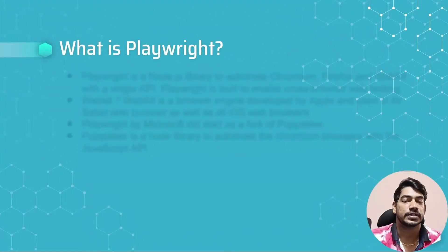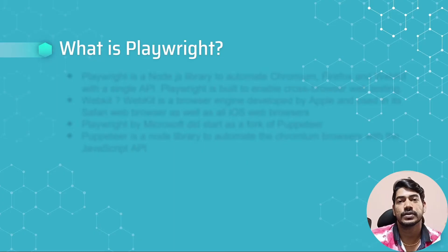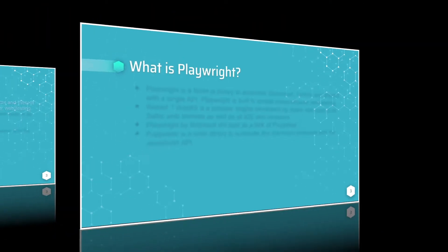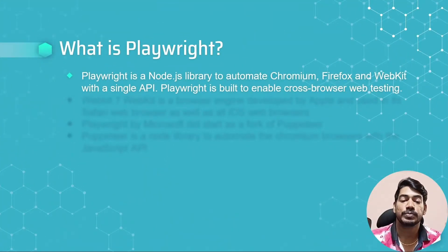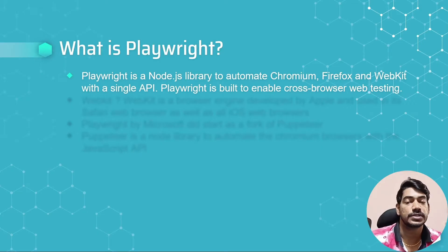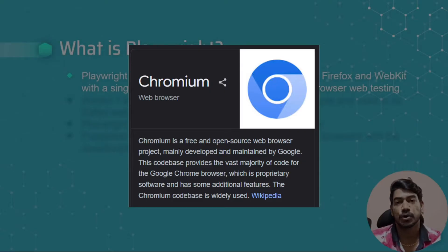If you have already watched our Playwright with TypeScript tutorial playlist, you probably know what Playwright is. There is a new version released every month with a lot of changes, so I'll cover that. Playwright is a Node.js library to automate Chromium, Firefox, and WebKit with a single API. It is built to enable cross-browser testing. Chromium is the browser engine used by Chrome, Brave, and the newly launched Arc browser.